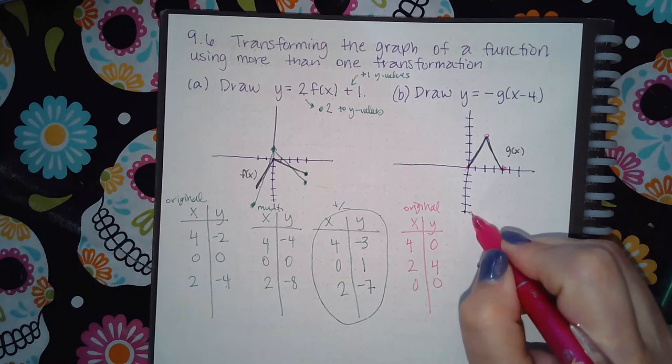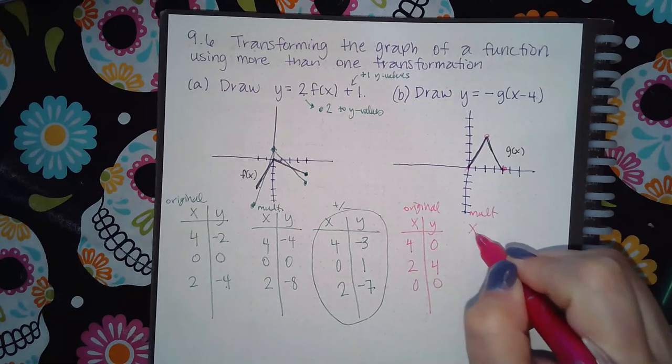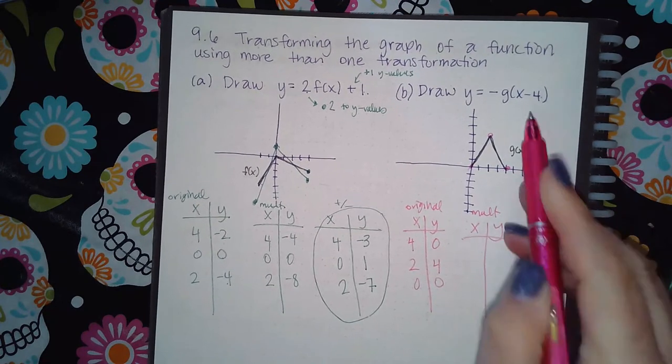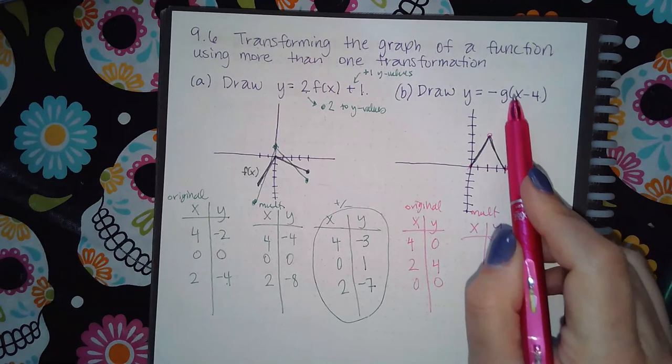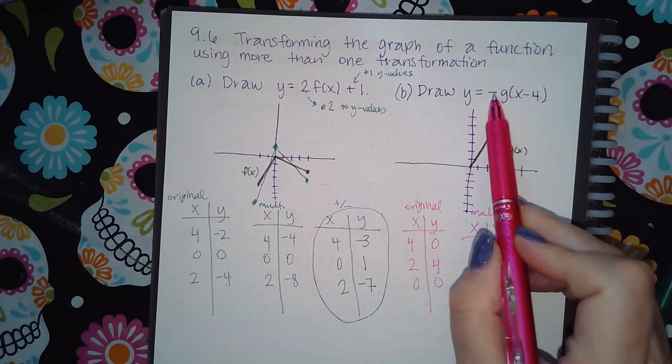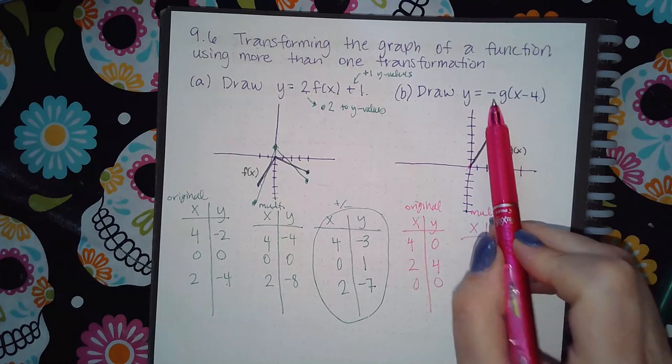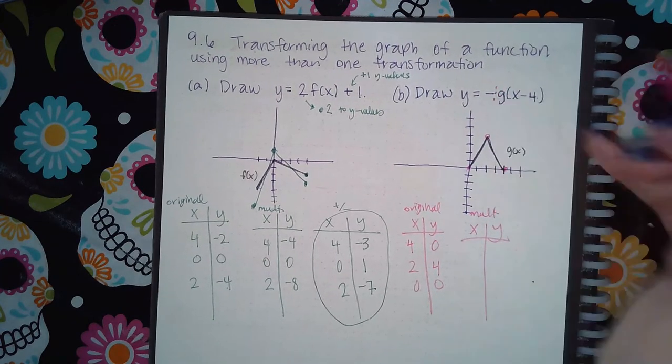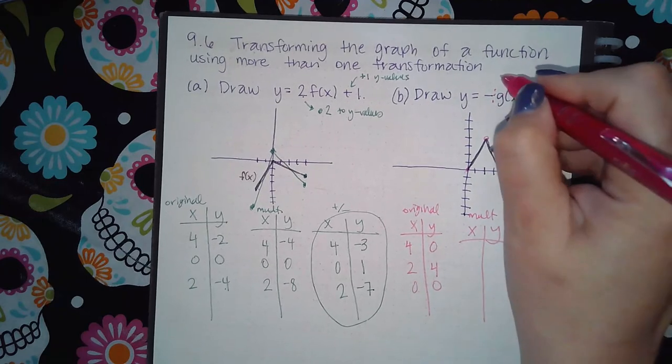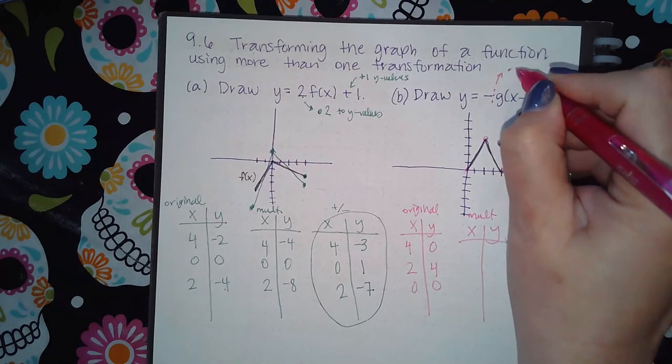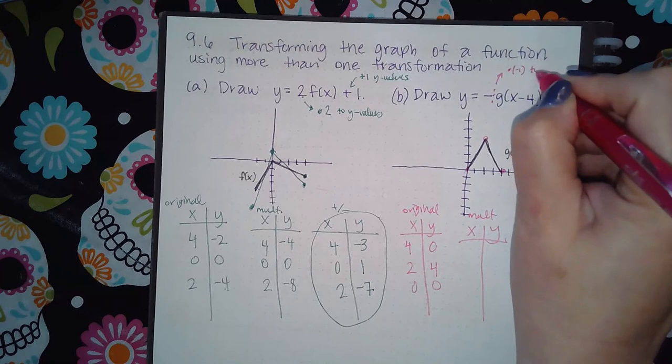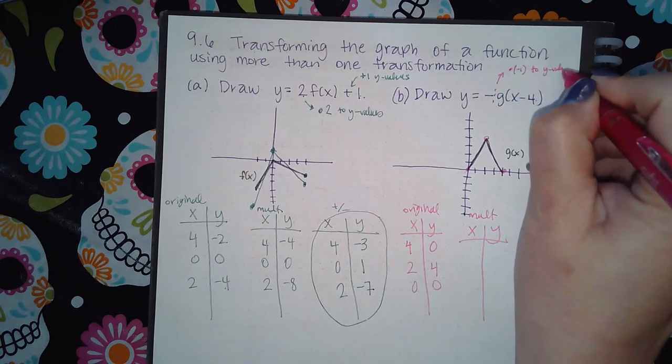Now I'm going to work on the multiplication first, or the coefficients. Now it could be a coefficient in here times the x, or it could be a coefficient out in front of the whole basic function. Mine is on the outside, and it's like a negative one. So that means I'm going to multiply negative one to my y values, because it's on the outside.